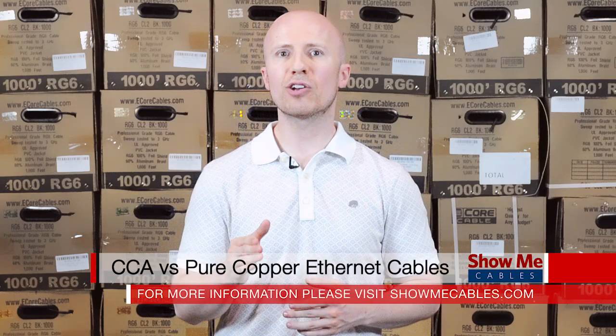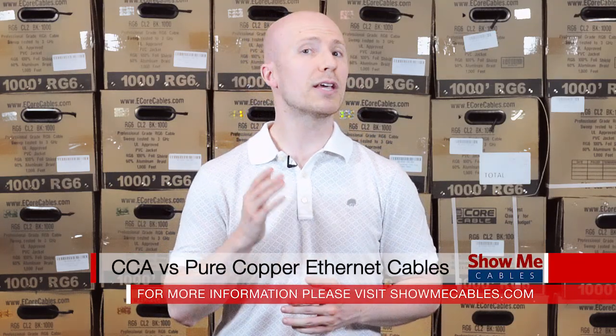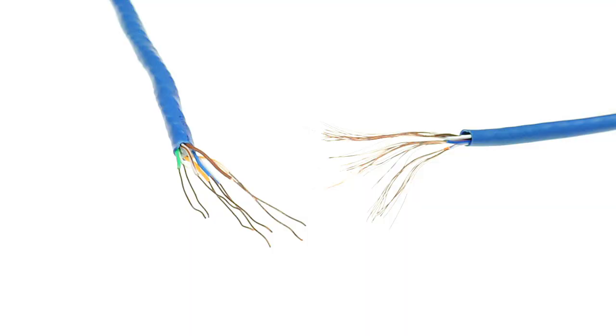When shopping for Cat5e or Cat6 network cables, make sure you're comparing apples to apples. One of the most common tactics of low-cost leaders is to use aluminum instead of copper wire. They take aluminum and dip it in a thin coating of copper.